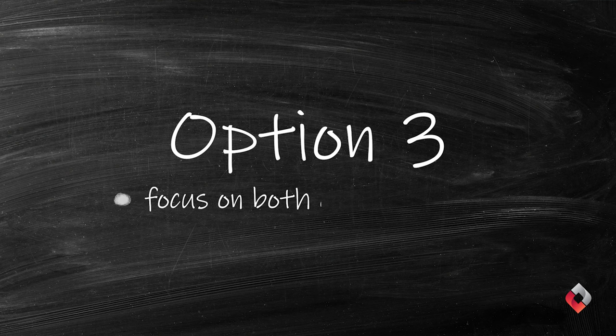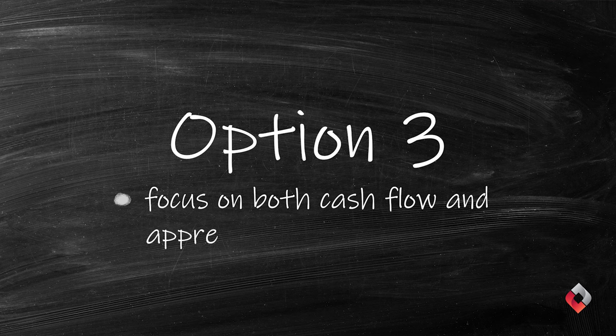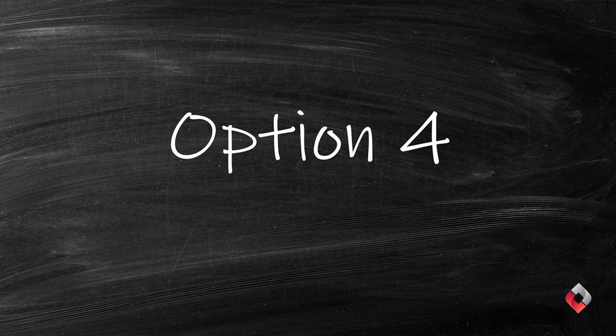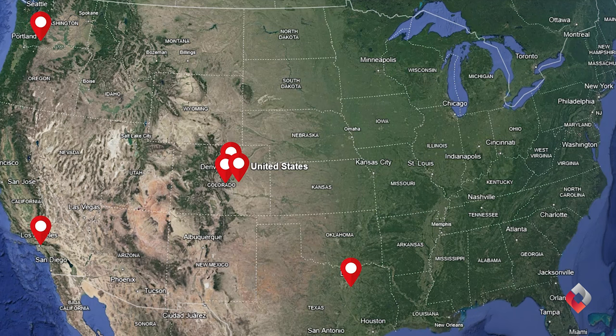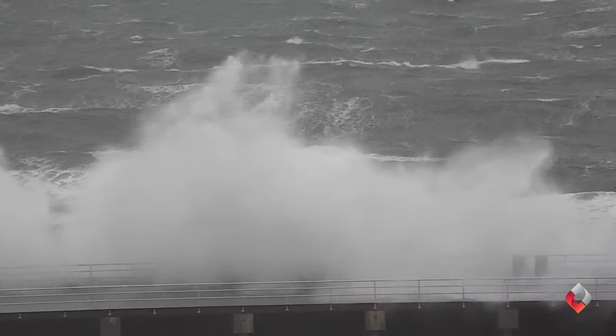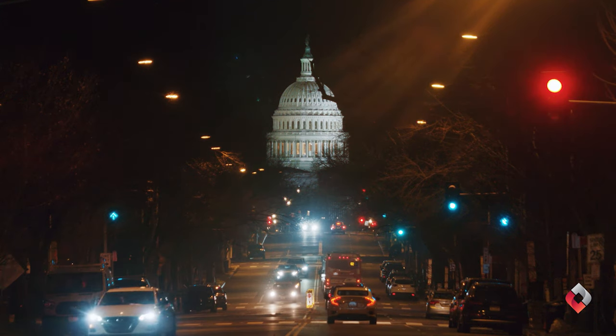Option 3: Focus on both cash flow and appreciation models. Take risks in your cash flow-focused investments while preserving capital in your appreciation-focused investments. Option 4: Consider investing in different markets. Seek opportunities to grow in cities and explore out-of-state options. Building a presence in multiple markets can help mitigate losses caused by unforeseen circumstances, like natural disasters or changes in governmental ordinances.